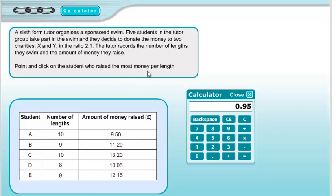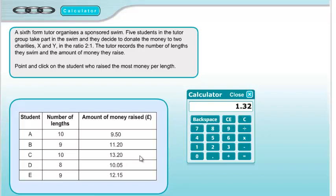We're interested in the student who raised the most money per length. Student B: £11.20 divided by 9 gives £1.24 — the winner so far. Student C: £13.20 divided by 10 gives £1.32 — now the current leader. Student D: £10.05 divided by 8 gives £1.25, which is lower than C. Student E: £12.15 divided by 9 gives £1.35 — the highest of all pupils. So student E is the answer.